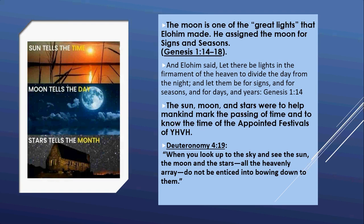The moon is one of the great lights that Elohim made. He assigned the moon for signs and seasons, as Genesis 1 says: 'And Elohim said, let there be lights in the firmament of the heaven to divide the day from the night, and let them be for signs and for seasons, days and years.' The sun, moon, and stars were to help mankind mark the passing of time and to know the time of the appointed festivals of Jehovah.